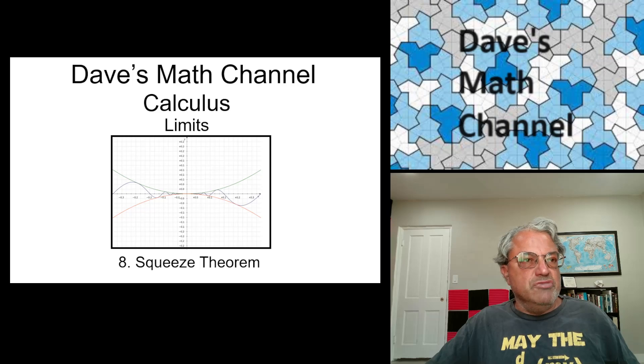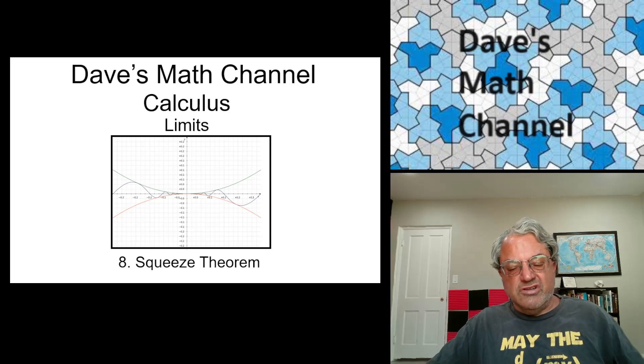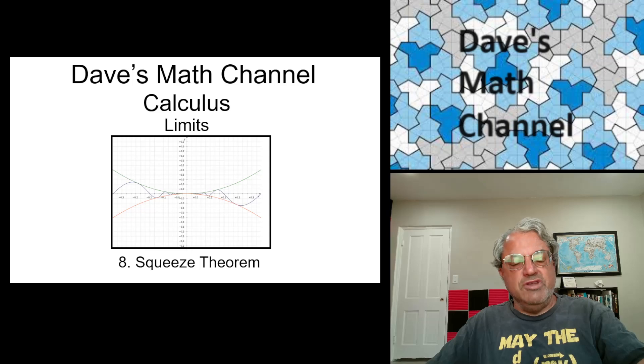In particular, the limit as x approaches 0 of sine x over x. So that's equal to 1. And that's going to be a very important result, which we'll be able to use to come up with formulas for derivatives of all the trig functions. So anyway, let's begin.